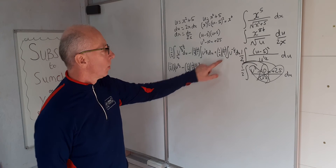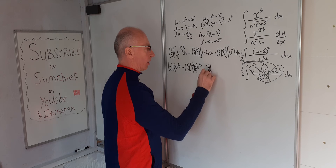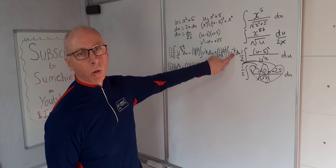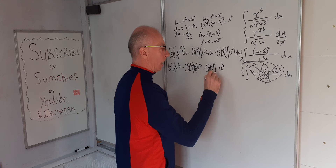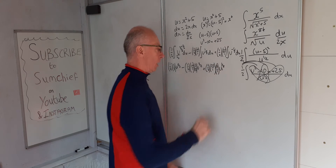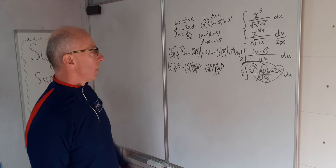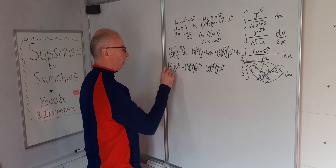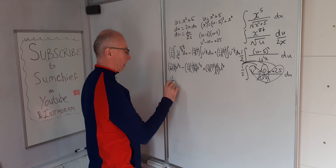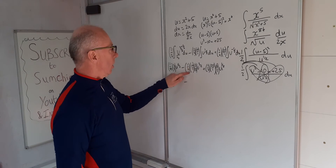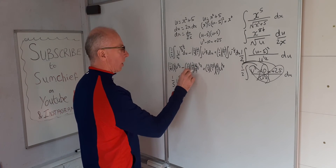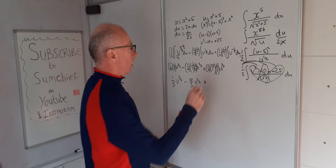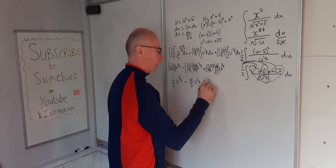For the third term: one half times 25 times u to the minus one half — adding 1 gives positive one half, and multiplying by the reciprocal gives two. Simplifying everything: the halves and reciprocals cancel out to give one fifth u to the five over two, minus ten over three u to the three over two, plus 25 u to the half.